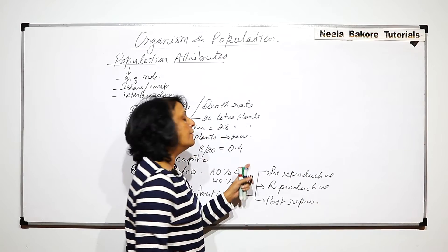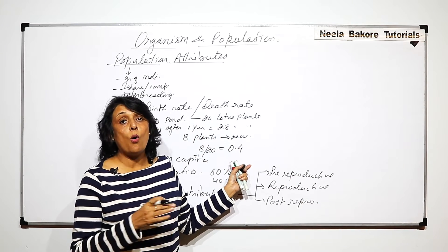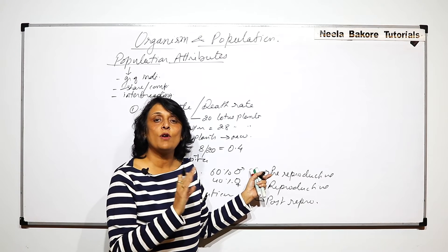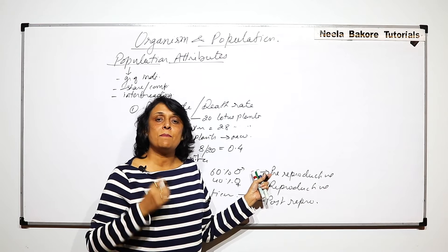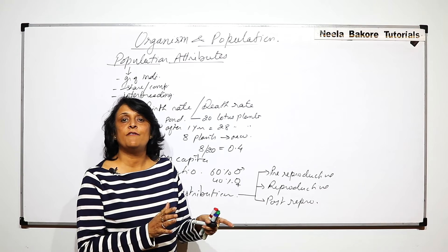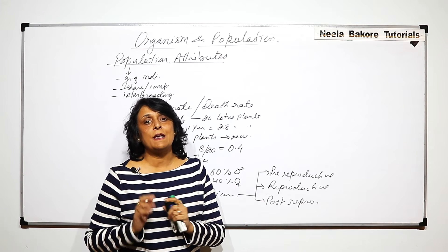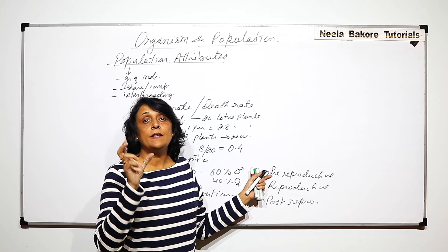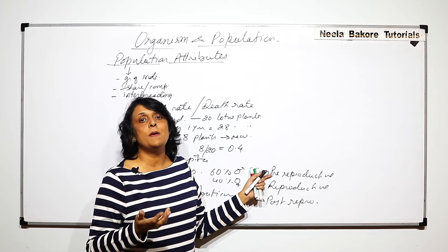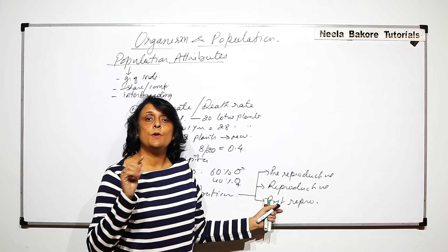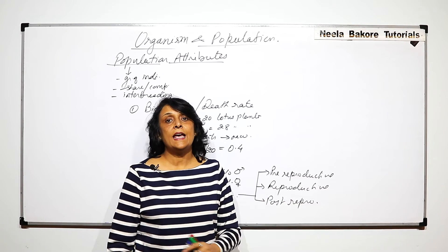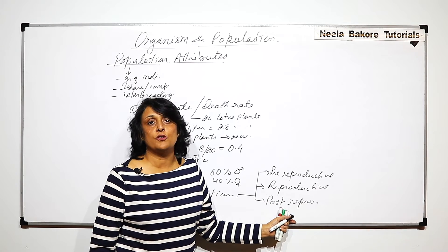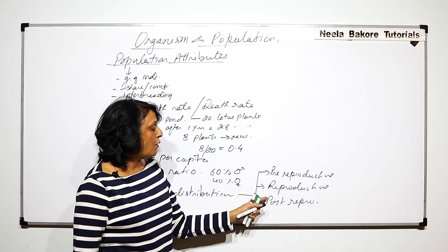This will vary for different organisms. For humans, pre-reproductive would be before 18. For mango plants, they remain in a juvenile or pre-reproductive phase for five to seven years before flowering. Once flowering begins, they enter the reproductive phase. In plants, the aging or senescence phase follows. In humans, normally after 45 when females enter menopause, that comes under post-reproductive.